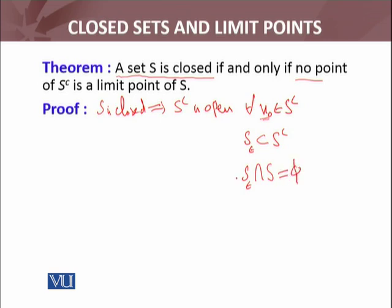But by definition of the limit point, x naught will be the limit point if every neighborhood, including this one, has non-empty intersection with S. This has empty intersection. So we have a neighborhood which has empty intersection.